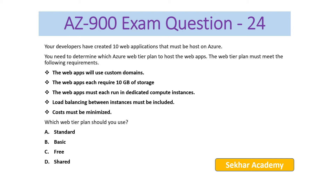The requirements are clear. The options are: A) Standard, B) Basic, C) Free, and D) Shared. Basic, Free, and Shared will not have the ability to provide dedicated compute instances or load balancing. The Standard plan allows custom domains, provides the required 10 GB of storage, and includes load balancing. So the right answer is A, Standard.